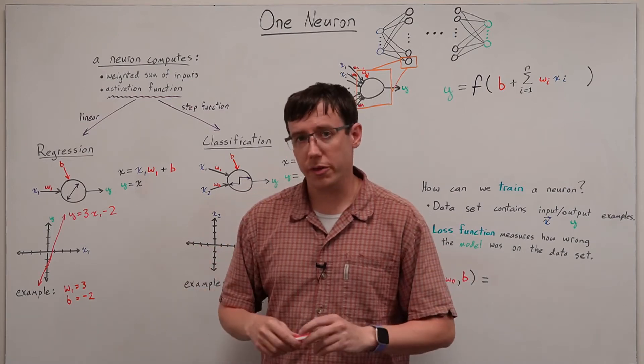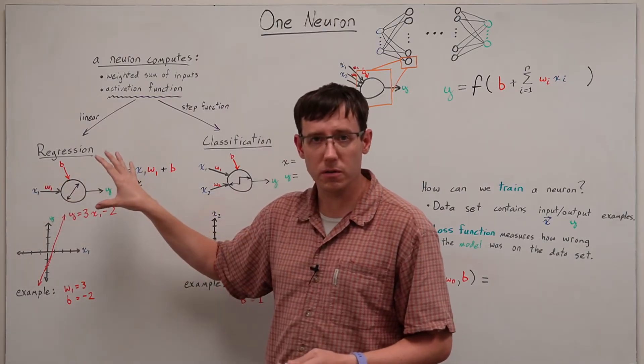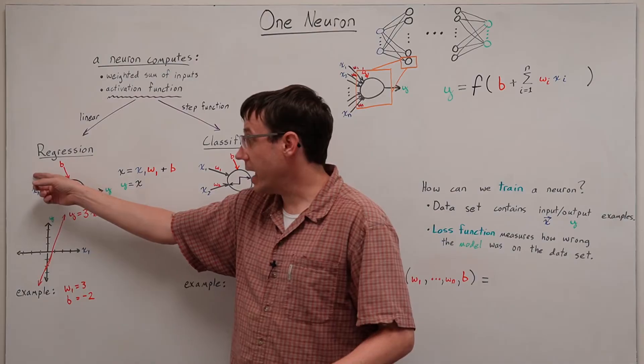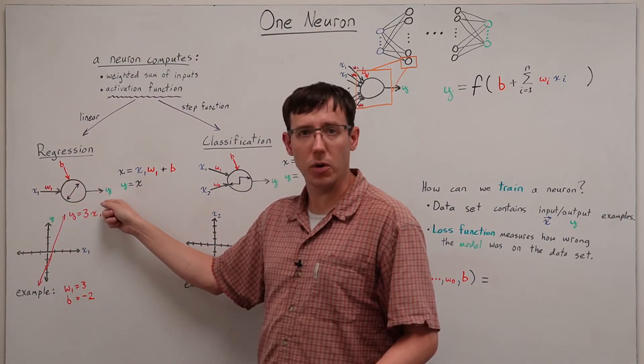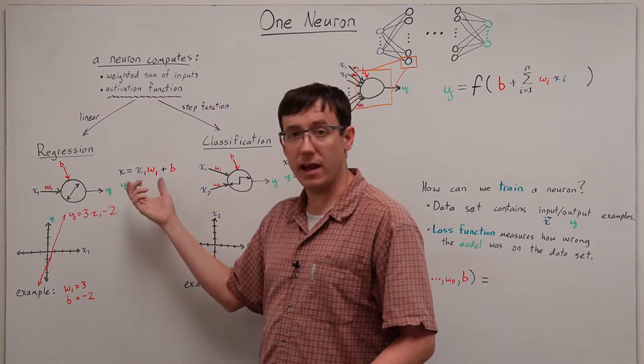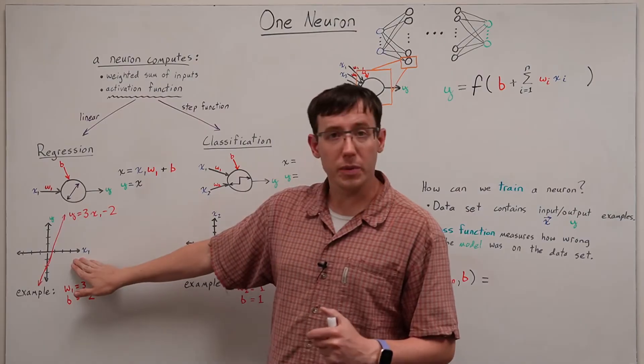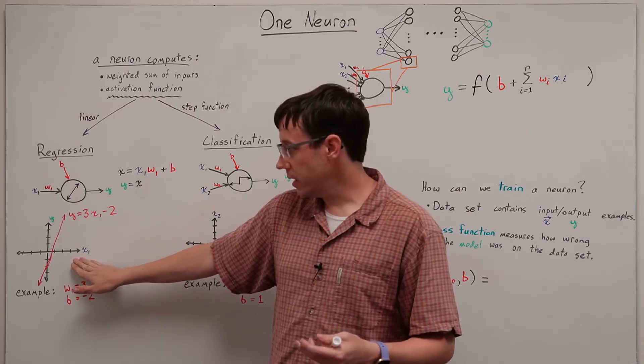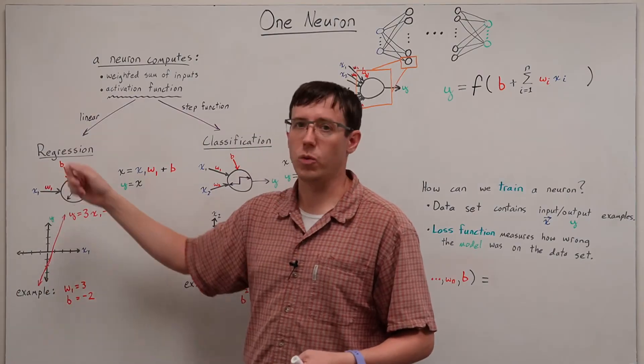It's also worth thinking about what would it look like if this neuron had more inputs. Well then we would be mapping a multi-dimensional input to a one-dimensional output, but we would still have a linear function and could still use that for regression, but I would no longer be able to draw the plot. Here, our input is one dimension and our output is one dimension.